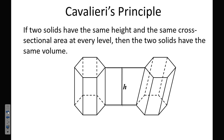Cavalieri's principle — you don't have to write this down — states that if two solids have the same base and the same height between those bases, it doesn't matter if it's right or oblique; they'll still have the same volume. Think about a deck of cards: when you push it to the side so it's at a slant, that doesn't change the volume of the cards. One stacked straight up and one stacked to the side still have the same volume.